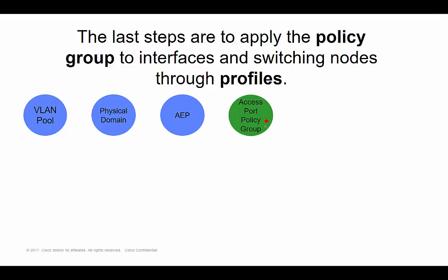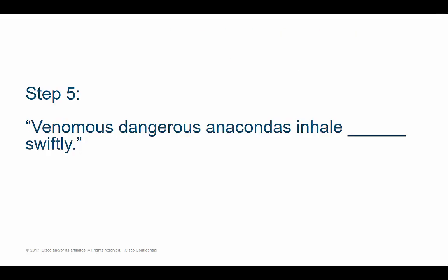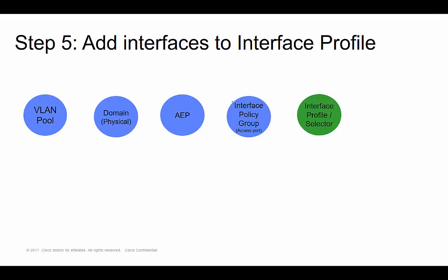Step four was policy, but steps five and six are going to contain the word 'profile.' Let's go to step five. Let's go back to our crazy mnemonic phrase: venomous, dangerous, anacondas, inhale blank swiftly. The fifth word is 'iguanas,' and that takes us to step five — we're going to create something called an interface profile, where we pick an interface or interfaces to apply the configuration to.